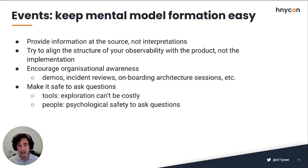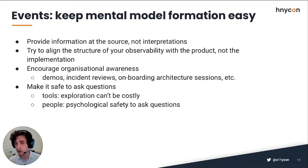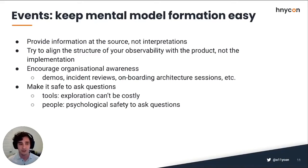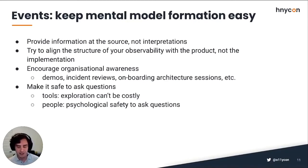One thing to do is provide information at the source, not interpretations. You want to expose data about what happened, not necessarily the cause. I don't want the routing component to tell me why it thinks something is going wrong elsewhere — I want it to give me information. That way, your operators interpret and frame the context using their richer capability. Another practice is to align the structure of your observability with the product rather than the implementation. When we turn on OpenTelemetry and suddenly get metrics and traces about everything, a lot of those are focused on what the code is doing.